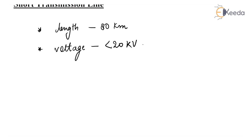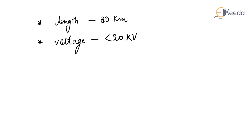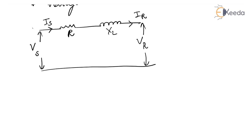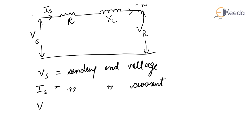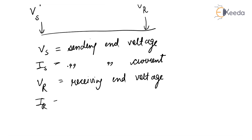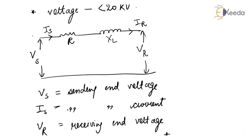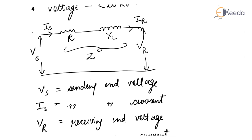I'll draw the equivalent circuit of a single phase short transmission line, consisting of resistance and inductance. In this circuit, Vs is the sending end voltage, Is is the sending end current, Vr is the receiving end voltage, Ir is the receiving end current. R is the loop resistance, XL is the loop reactance, and the impedance is R plus jXL.